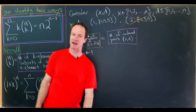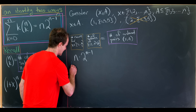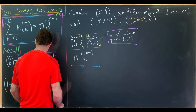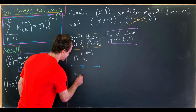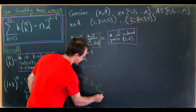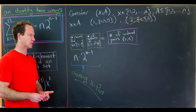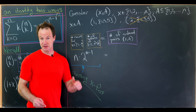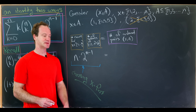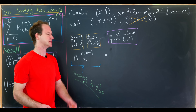Before moving on, let's point out what really made this work: choosing x first gave us the right-hand side. Now let's see what we get if we choose a first — that is, choose the subset first. We can choose 0-element subsets, 1-element subsets, 2-element subsets, and so on. All of those choices are disjoint, so we can use the additive principle.